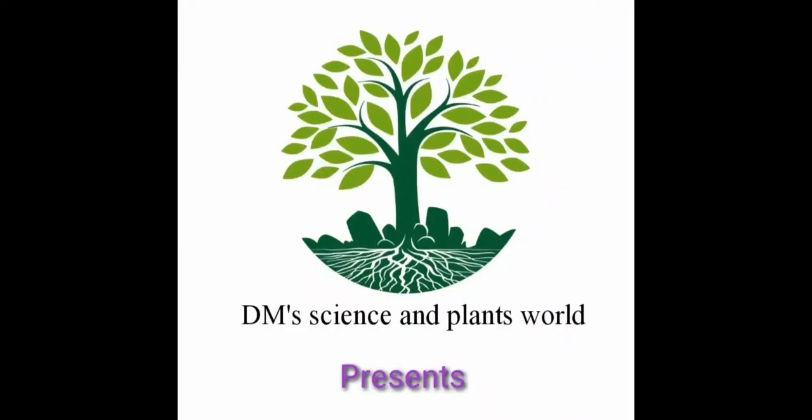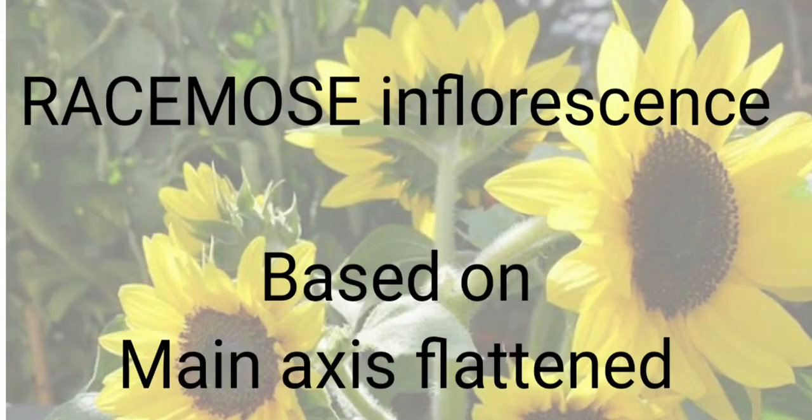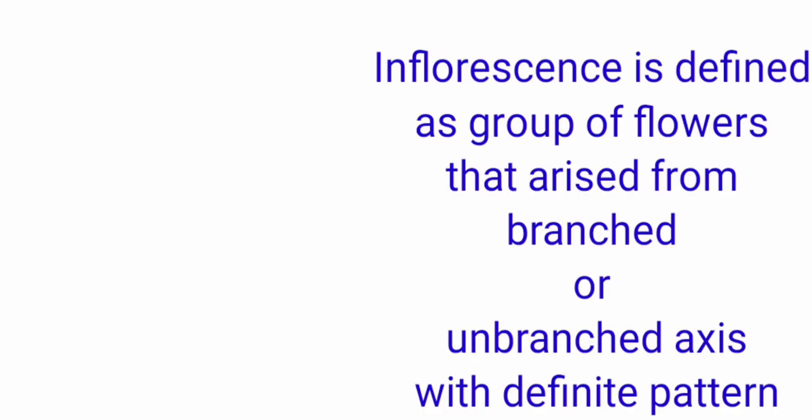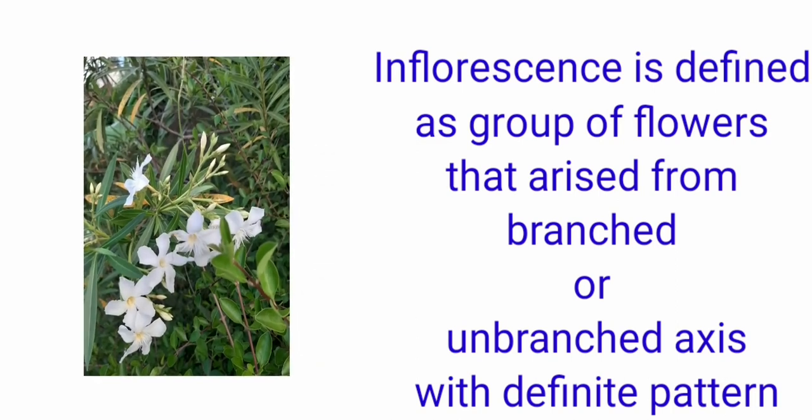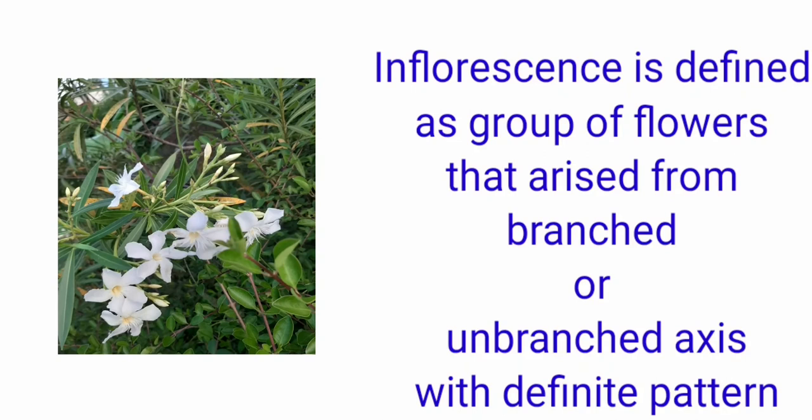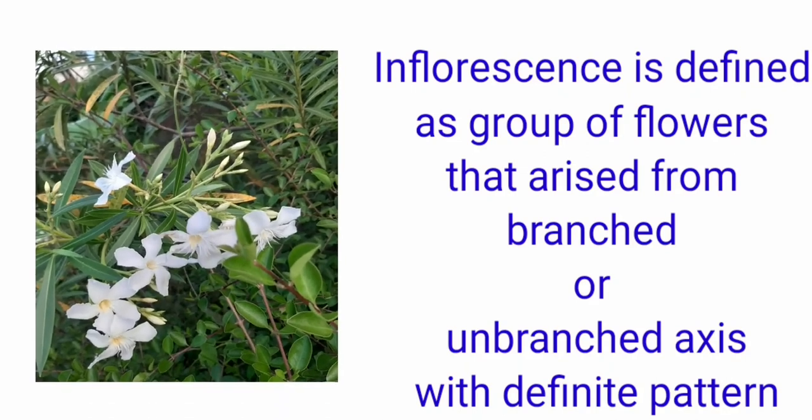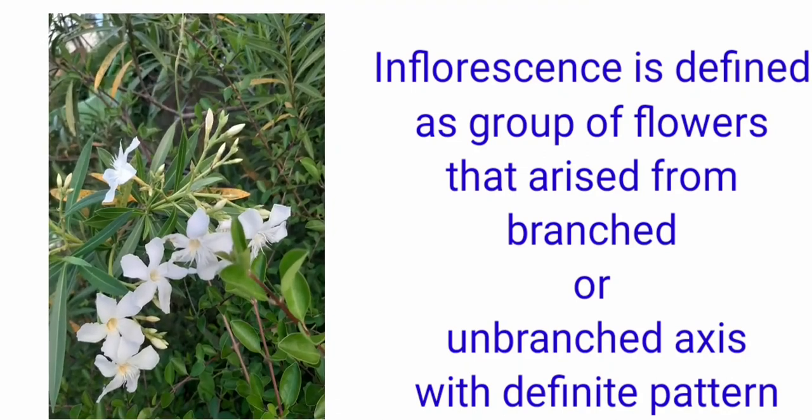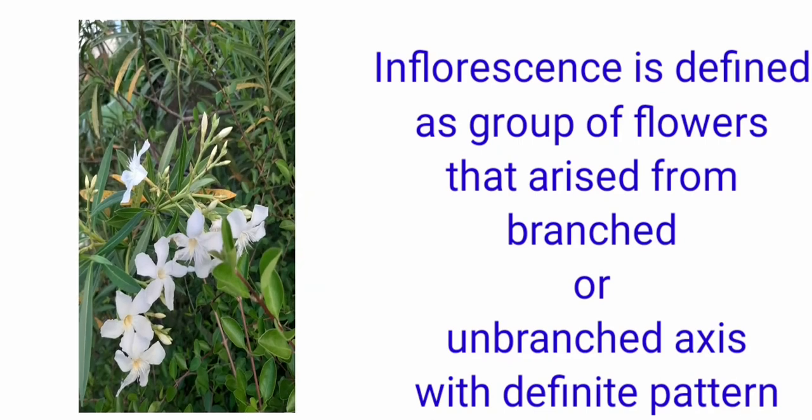DM Science and Plants World presents about the Racemose inflorescence based on the main axis flattened. Here the inflorescence is defined as the group of flowers that arised from branched or unbranched axis with definite pattern.